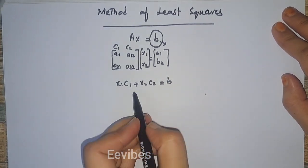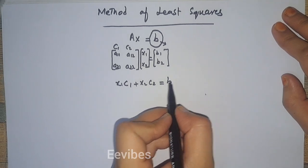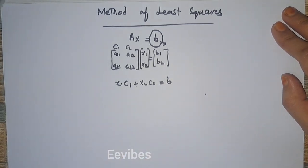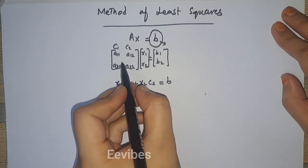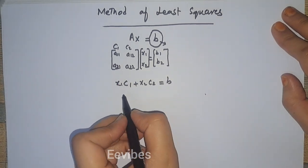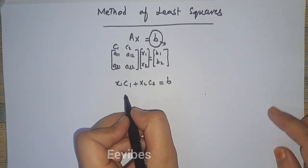This is possible only when B lies in the column space of the matrix A. But what about if this is not possible? So let's have an example.